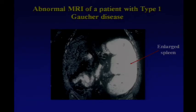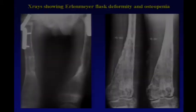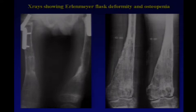The most common finding is splenomegaly — most often painless — and these spleens can be enormous, sometimes brimming over the pelvic rim. One of the more common causes of morbidity is skeletal disease, including fractures and osteopenia. The classic radiologic finding is the Erlenmeyer flask deformity of the distal femur, which radiologists consider almost pathognomonic.